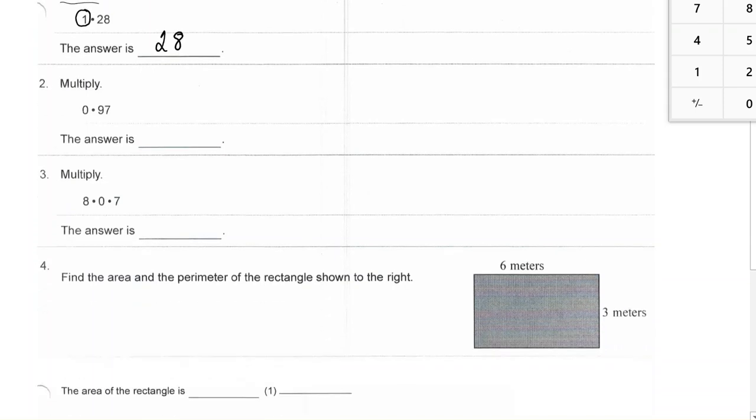Number two. The problem is to multiply 0 times 97.